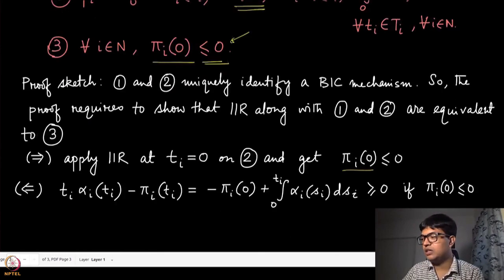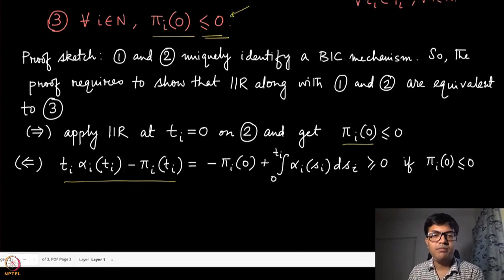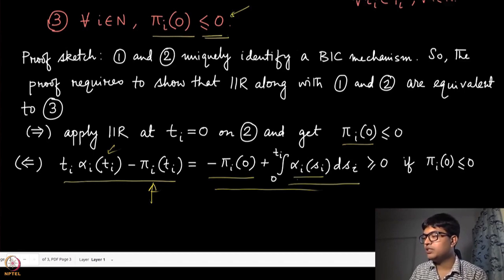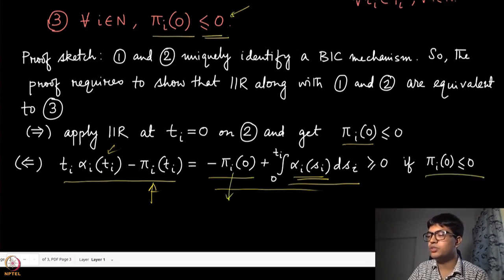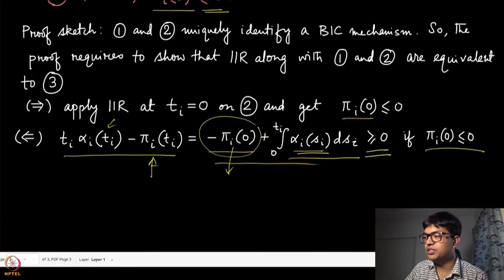In the reverse direction: assuming condition three and conditions one and two, we write the utility of player i and substitute π_i according to the integral formula. The t_i · α_i term cancels, and what remains is -π_i(0) plus the integral part. Since the integral is over a probability distribution it is non-negative, and since π_i(0) is non-positive, -π_i(0) is also non-negative. Therefore the total utility is ≥ 0, confirming IIR. We will use these results when finding the optimal revenue-maximizing mechanism.